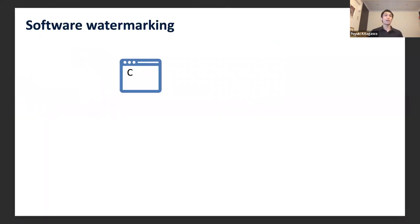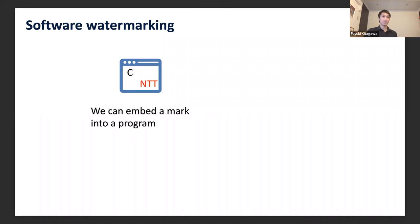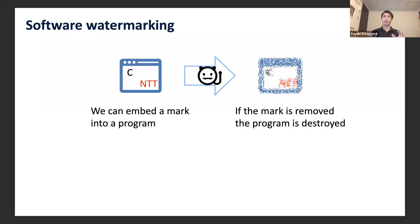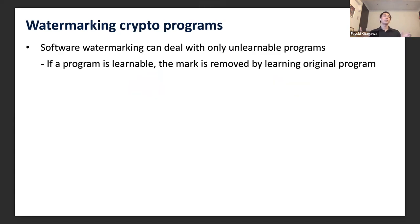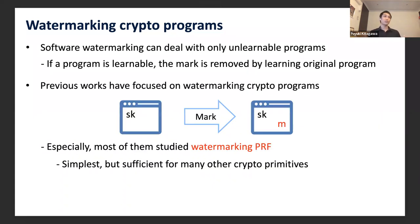In software watermarking, we can embed a mark into a program in such a way that if the mark is removed, the functionality of the program is also destroyed. The purpose of software watermarking is proving ownership, preventing illegal copies, and so on. However, we can only deal with unrunnable programs, since if a program is runnable, the mark can be easily removed by simply running the original program.